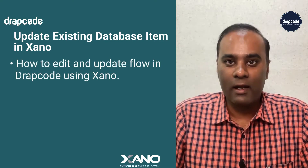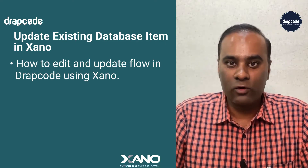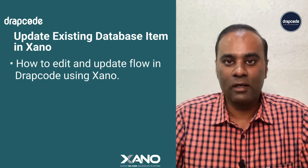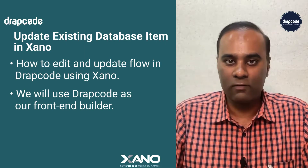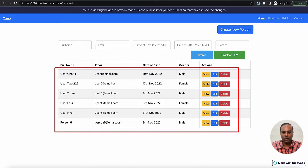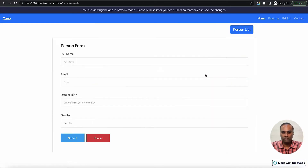Hi guys, this is Vishal here from Drapcode. In this video we will understand how to implement the edit and update flow in Drapcode using Xeno. We are basically building a full application on Xeno where we are fetching data, creating new records, applying pagination, and downloading data. We have a project where we have integrated Xeno, fetching data through REST API, storing nothing persistently - using Drapcode as a 100% front-end builder. All data comes from Xeno and we have implemented an API to create new records, a view details page where we fetch data of an individual record and display it.